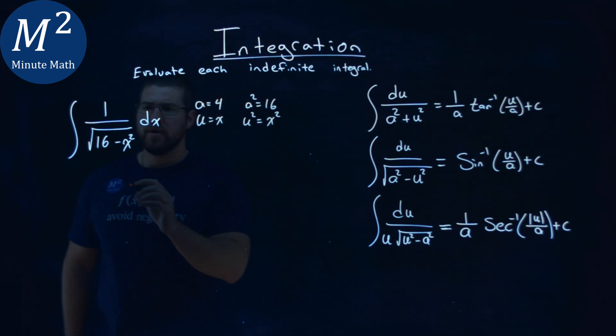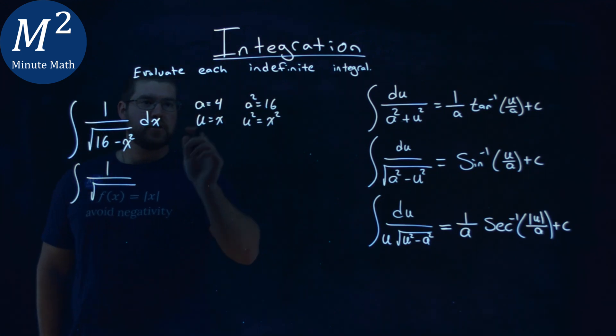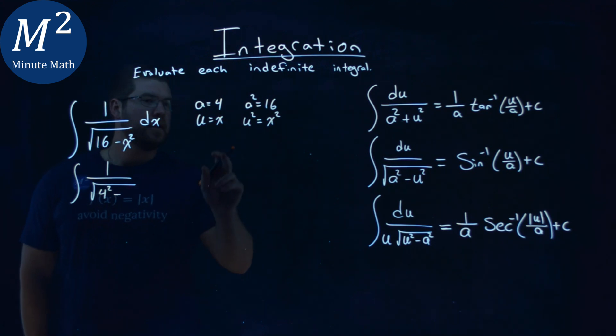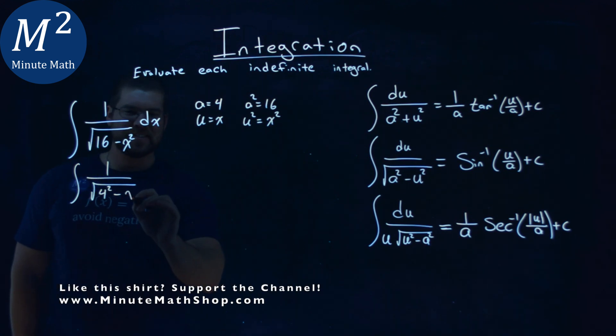So let's rewrite this integral. I have 1 over the square root of, I'm going to write it as my a squared, so 4 squared minus, and then I said u is x, right? So we just have x squared here.